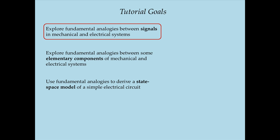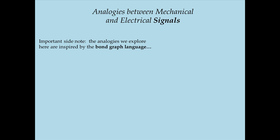An important caveat: there are actually multiple ways to construct analogies between mechanical and electrical systems. You can classify variables into flow variables versus effort variables, which is what we're going to do. You can also classify them into through variables versus across variables, which we won't cover. The particular analogies we're using are inspired by something called the bond graph language, grounded in the theory of bond graph modeling.